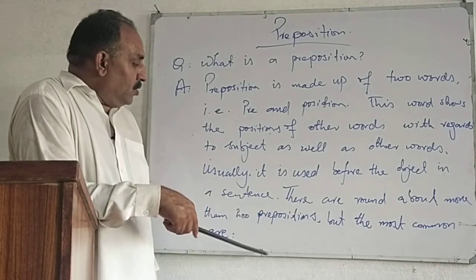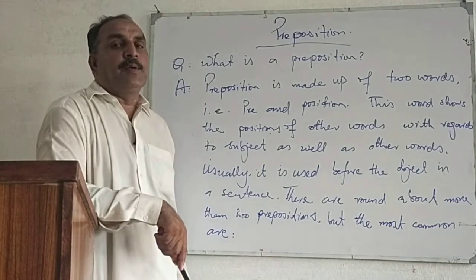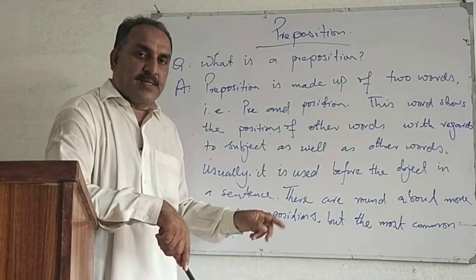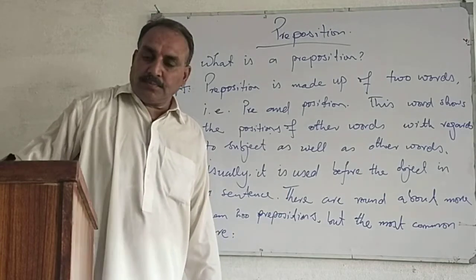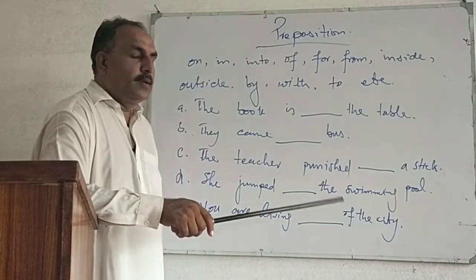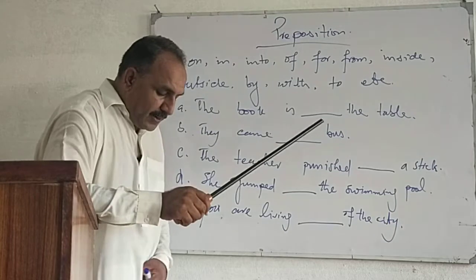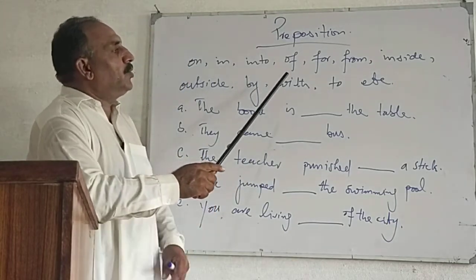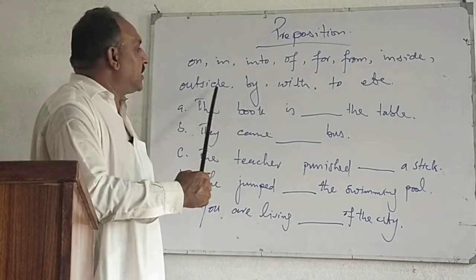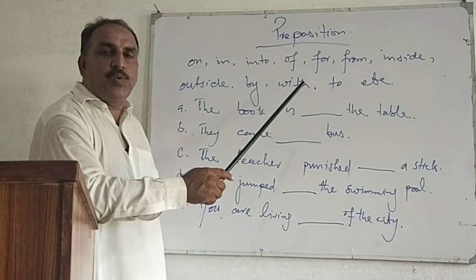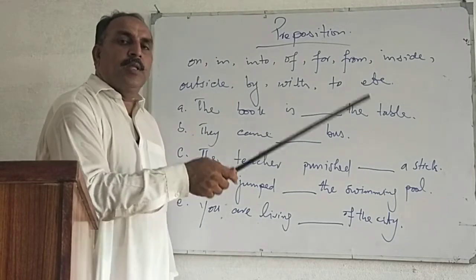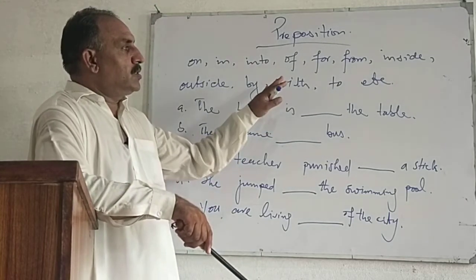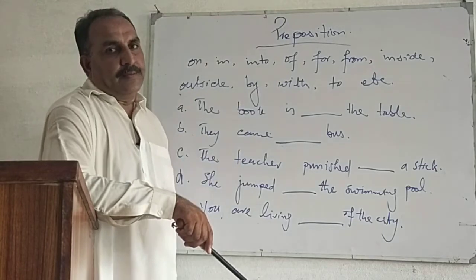There are around about more than 200 prepositions in English, but we will discuss the most common ones. For example: on, in, into, of, far, from, inside, outside, by, with, to, towards, etc. There is a long list of prepositions, but these are the most commonly used.